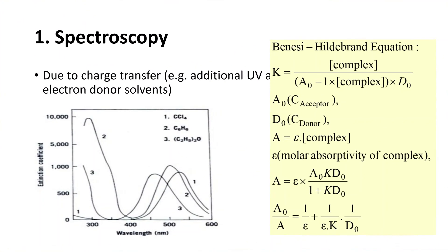Next, we move on to spectroscopic estimations. It is observed that the rate of transmittance changes and the extinction coefficient is different when a complex is being formed. By applying the equation, we can understand that this variation in transmittance or absorption is due to the formation of the complex.